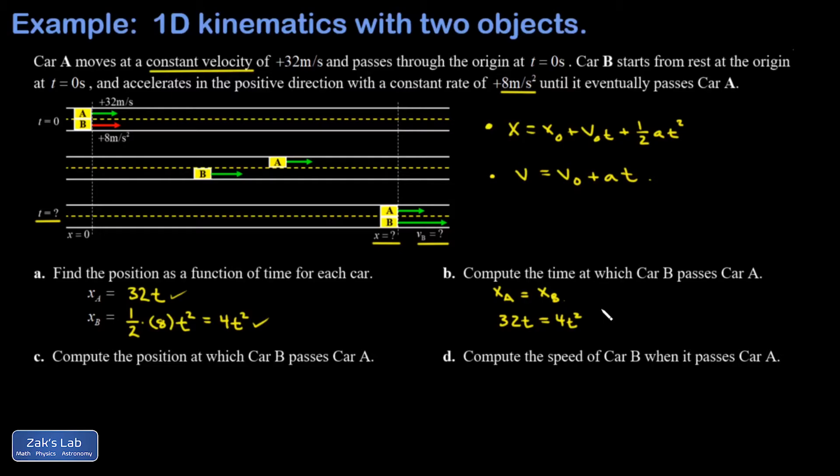The reason why is there's two different times where the two cars are in the same place. One of them, of course, was at t equals zero—that's where the problem started—and then the one I really am interested in is the other one. So we can go ahead and cancel out that extraneous solution. Dividing by four, I end up with t equals eight seconds.